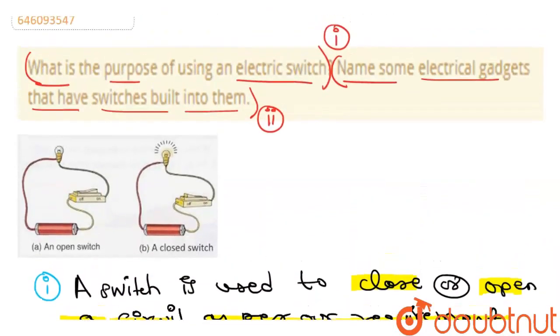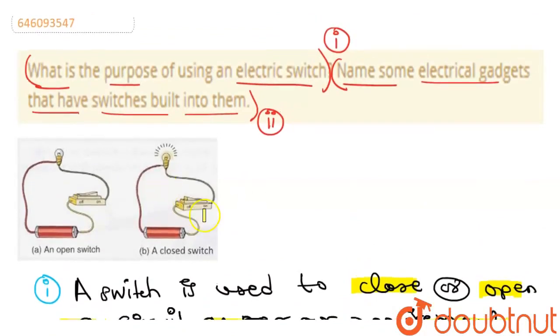So this is our first answer. This is the purpose - we can control the device and save electricity. Now let's answer the second part about devices with built-in switches.